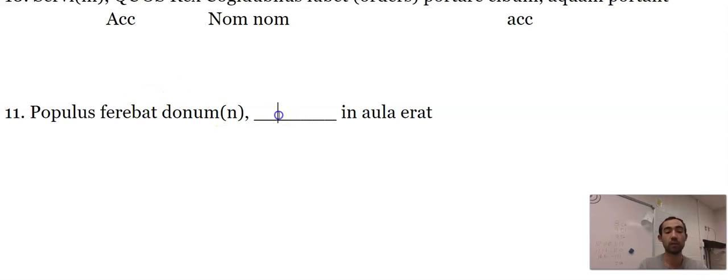Populus ferebat donum. They were bringing a gift. Blank in aula erat. In aula is ablative. So I'm missing just my subject, which was in the palace. Real simple on that one. Nothing crazy.